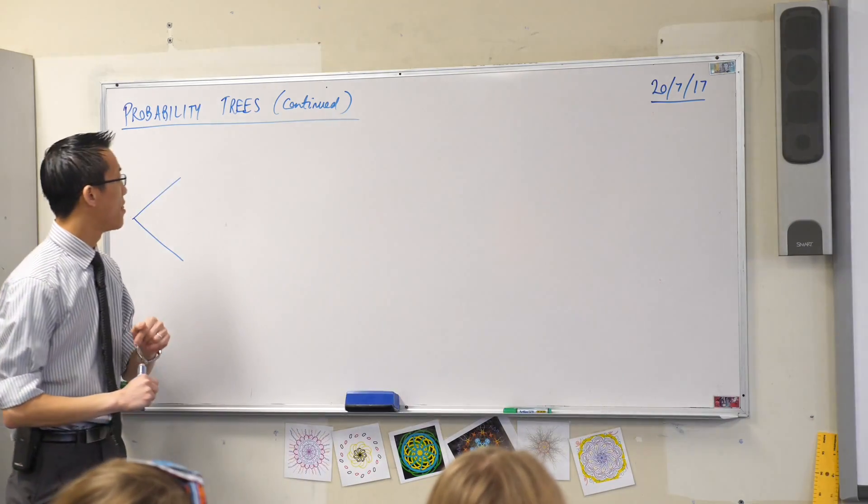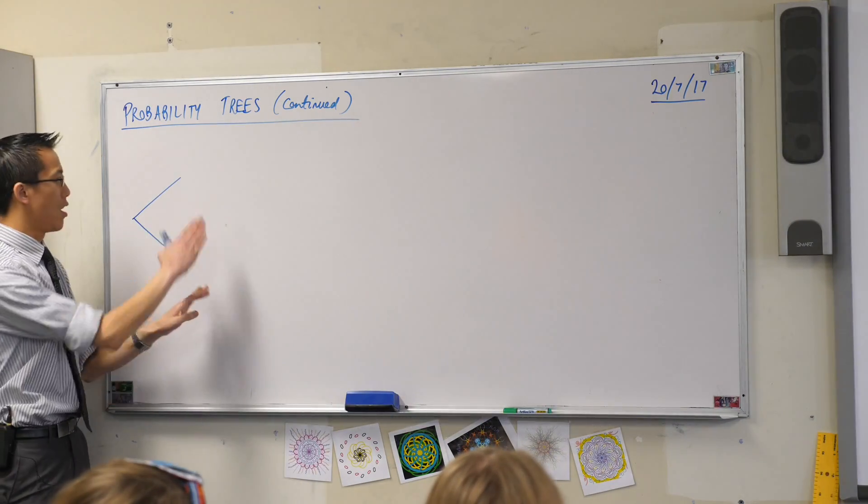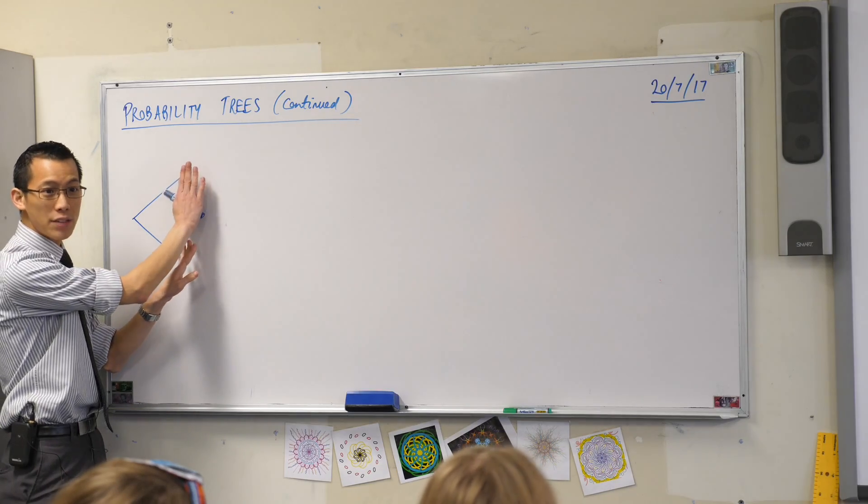You will recall from yesterday that when we looked at probability trees, what we map out is the chance of different things happening.